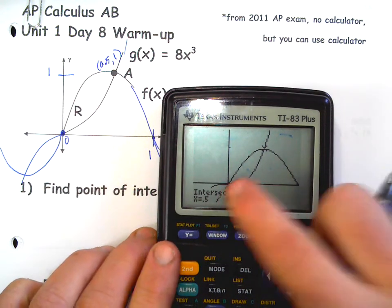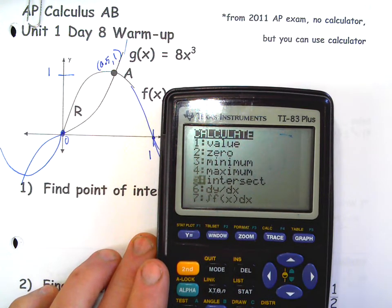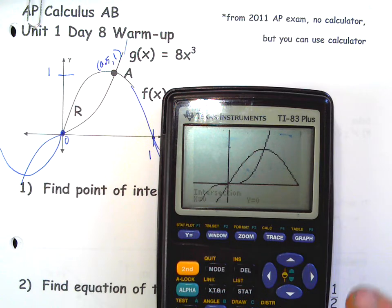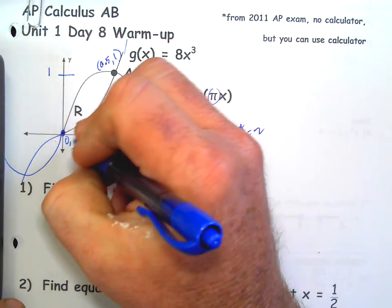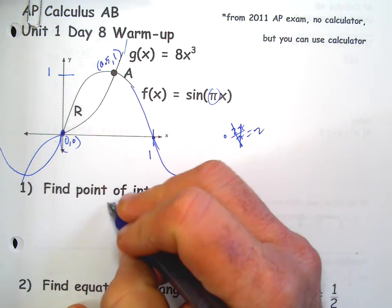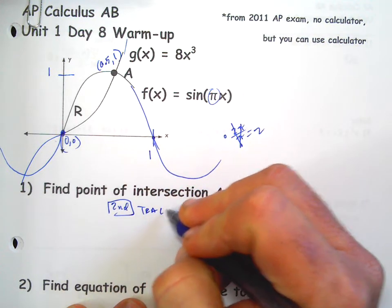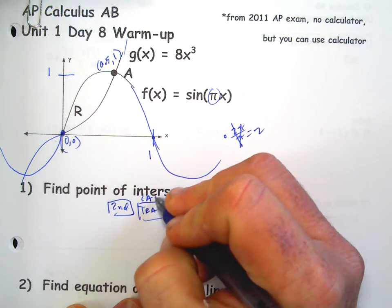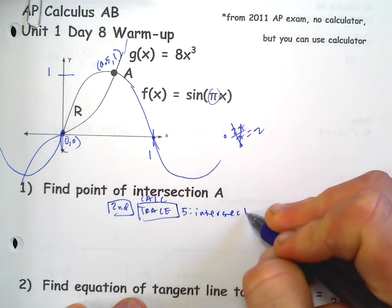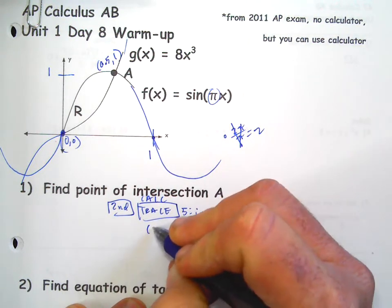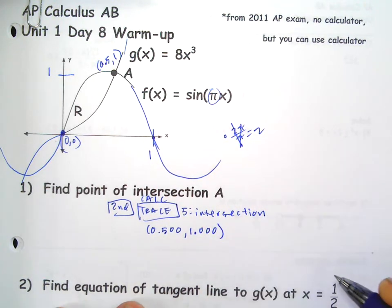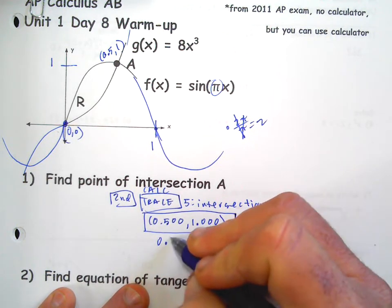So anyways this other one should be zero zero. We could double check it. Intersect, first curve, second curve, check like 0.1. Now your guess will find the closest intersection. So yep, zero zero just to confirm. Okay, so the commands: second trace calc number five intersection. So the answer is going to be 0.500 comma 1.000 if you want to emphasize that you are intending to give three decimal accuracy, but this would be okay.